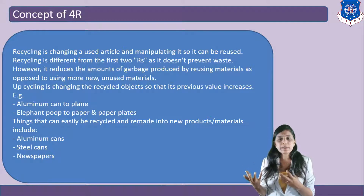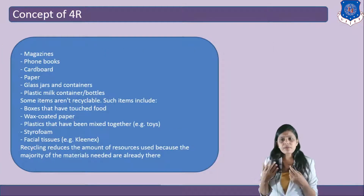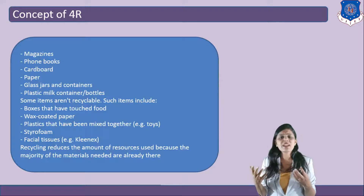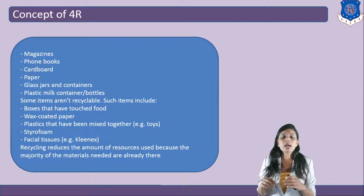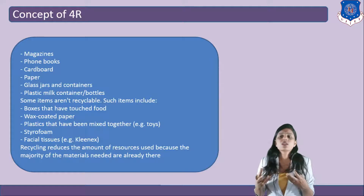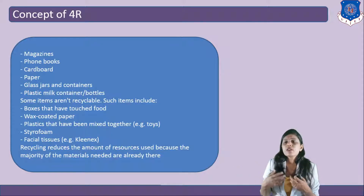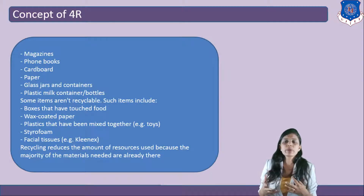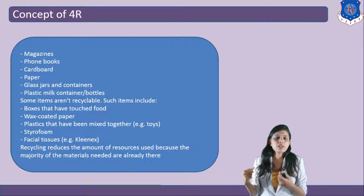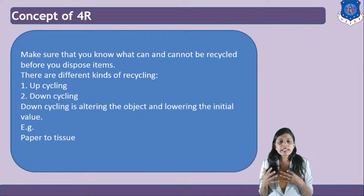Things that can easily be recycled or remade into new products include aluminum cans, steel cans, newspaper, magazines, phone books, cardboard, paper, glass jars, containers, plastic milk containers, and bottles. Some items are not recyclable, such as boxes that have touched food, wax-coated paper, plastics mixed together such as toys, toy foam, and facial tissue. Recycling reduces the amount of resources used because the majority of materials needed are already there. You should know what kind of waste is generated and which method — reduce, reuse, recycle, or recover — applies where.